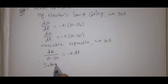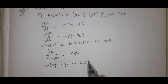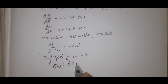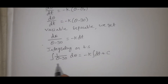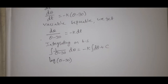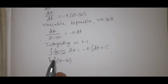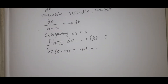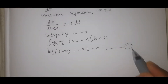Integrating on both sides: integral of 1 by theta minus 30 d theta equals minus k into integral dt plus C. Since integral of 1 by x dx is log x, we get log of theta minus 30 equal to minus k into t plus C. This is equation number 1.